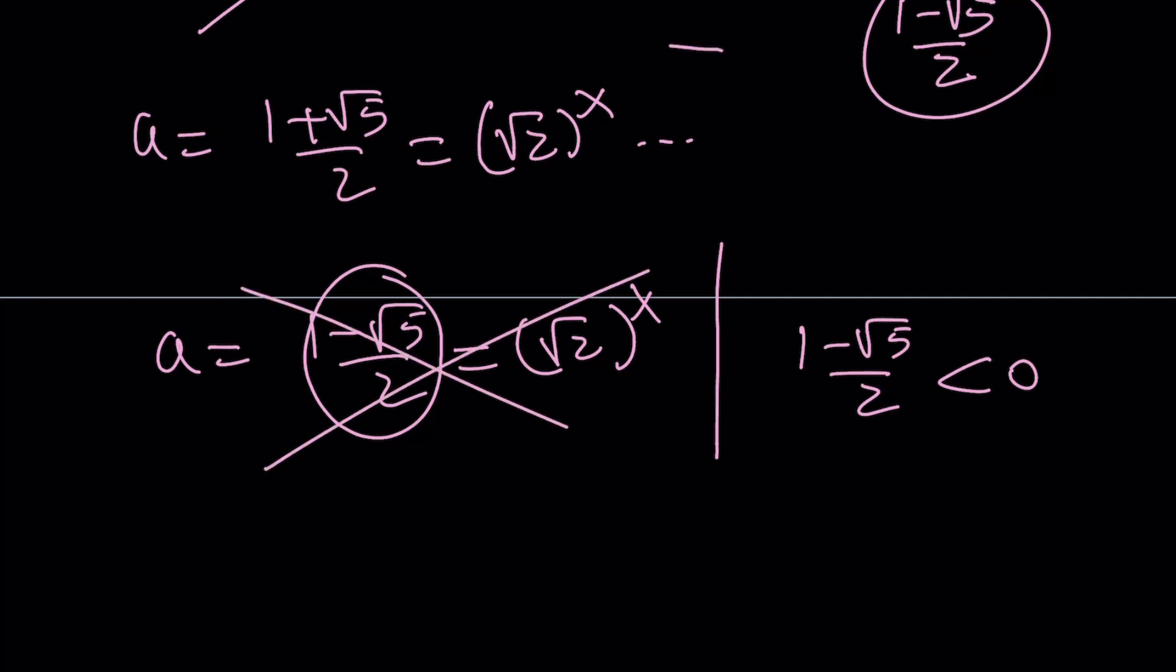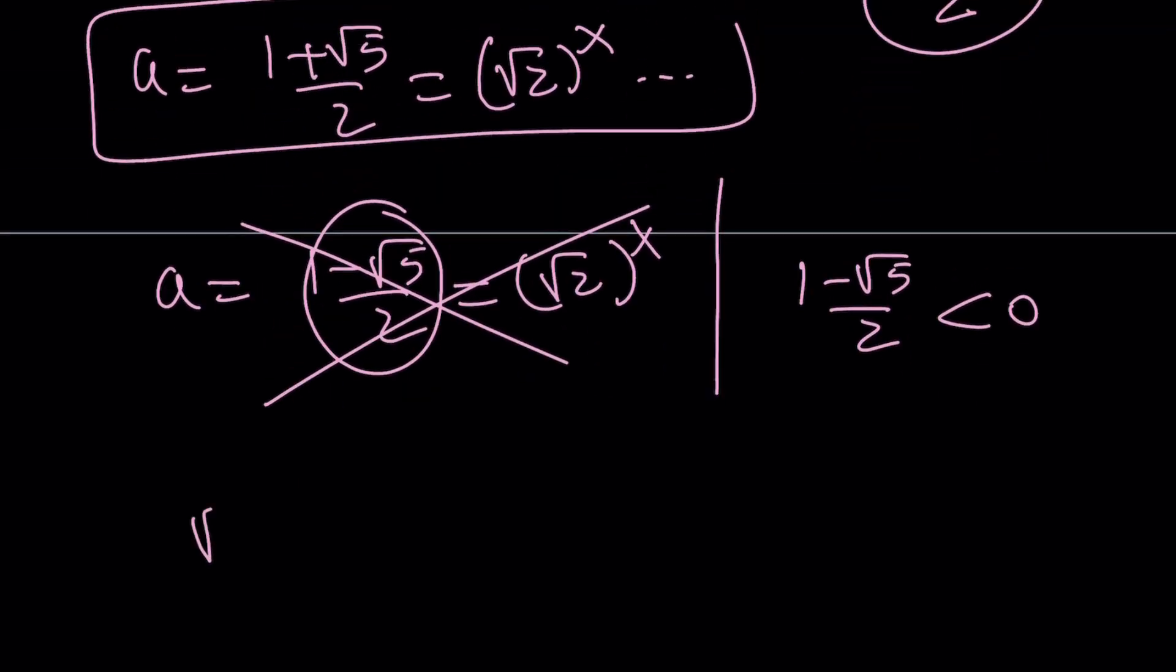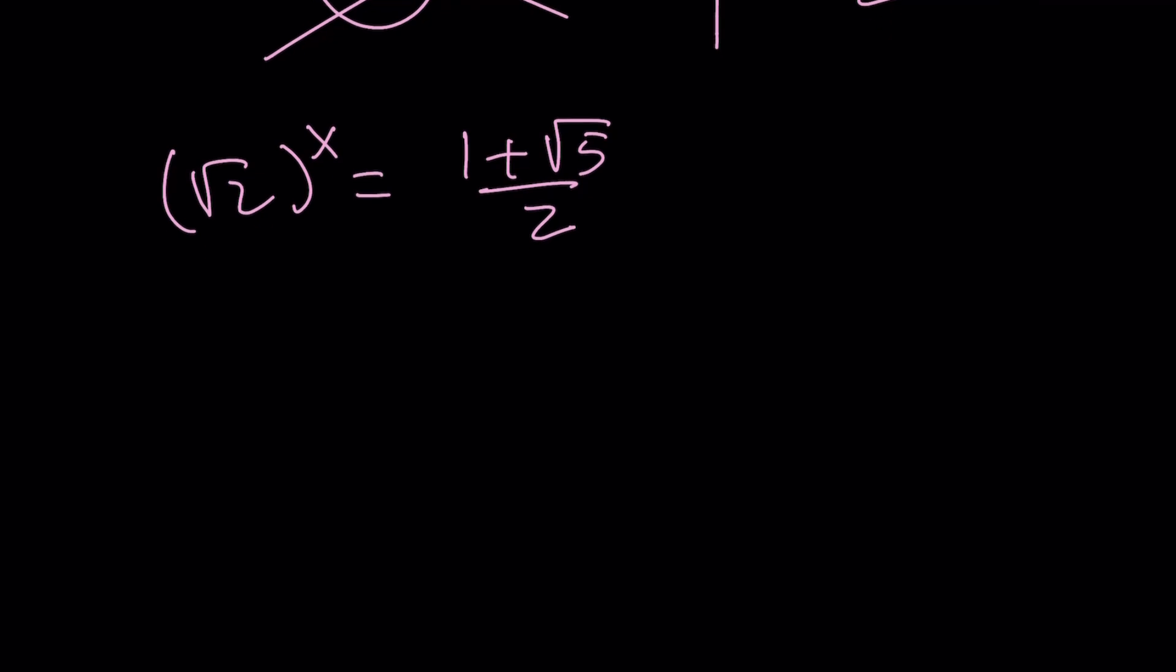So we're not going to get a solution from here. But we're going to go with the first one. And that's going to give us the following. Square root of 2 to the power of x equals 1 plus root 5 over 2. This is where the golden ratio comes in.